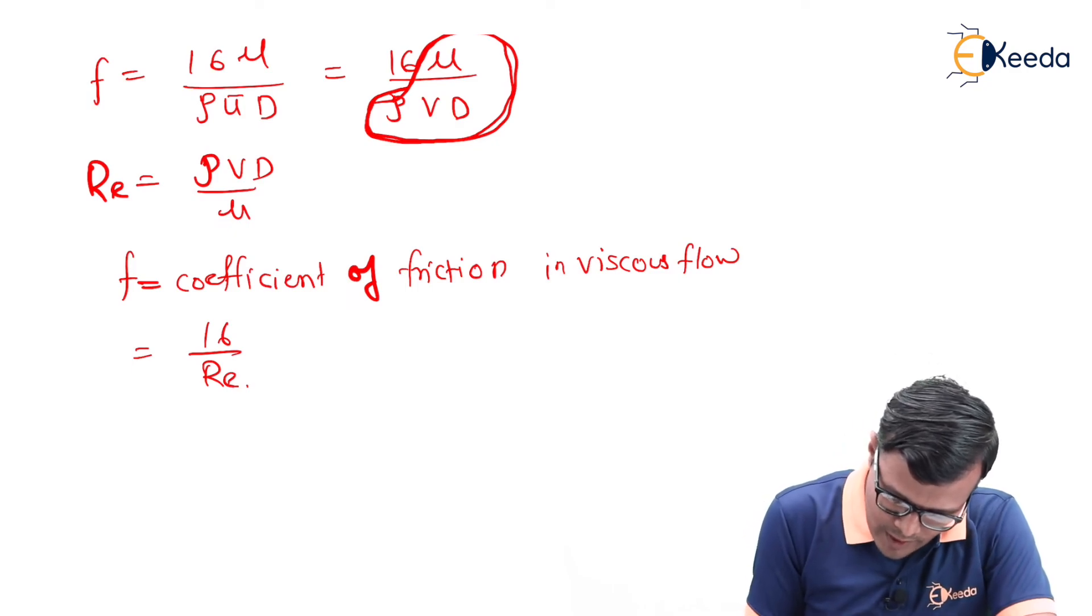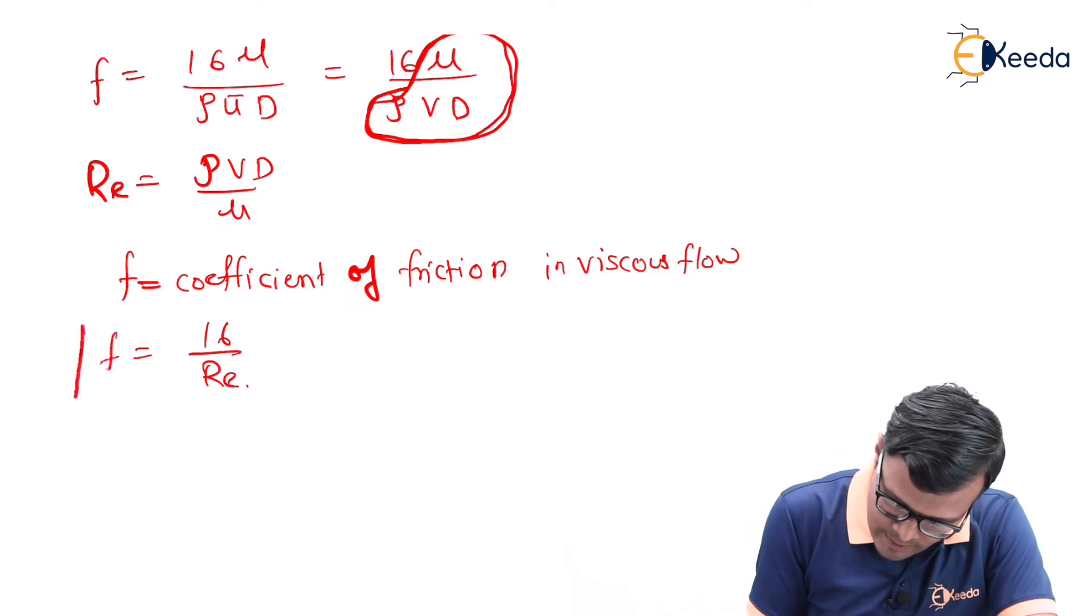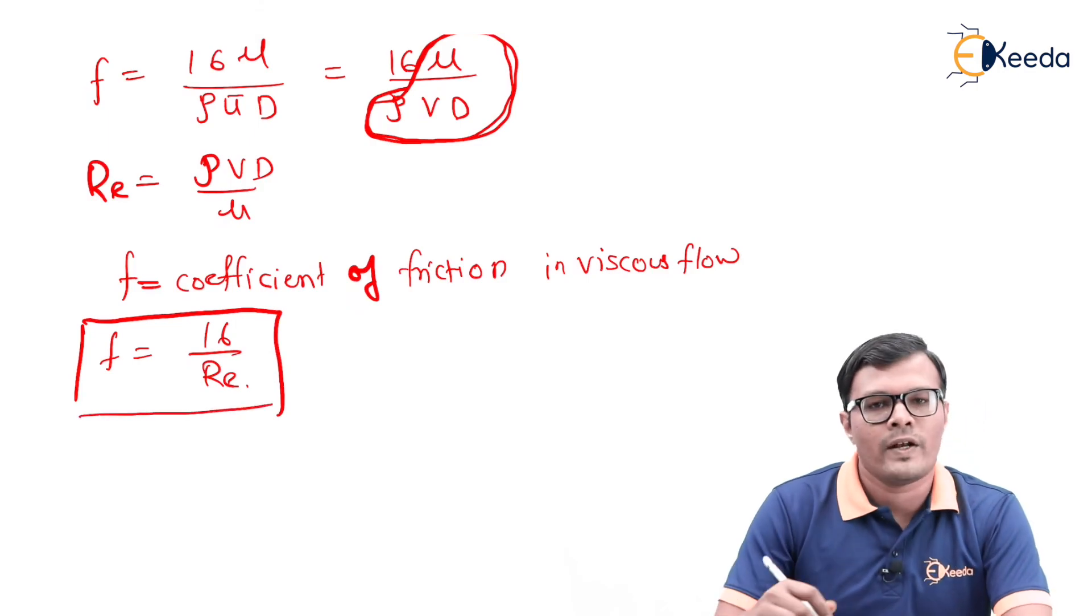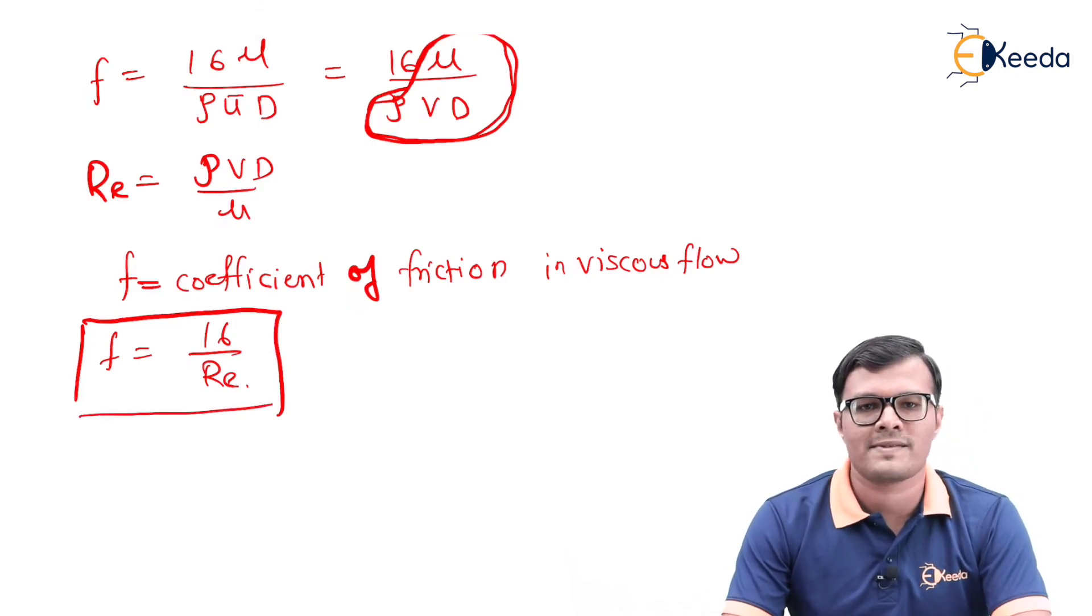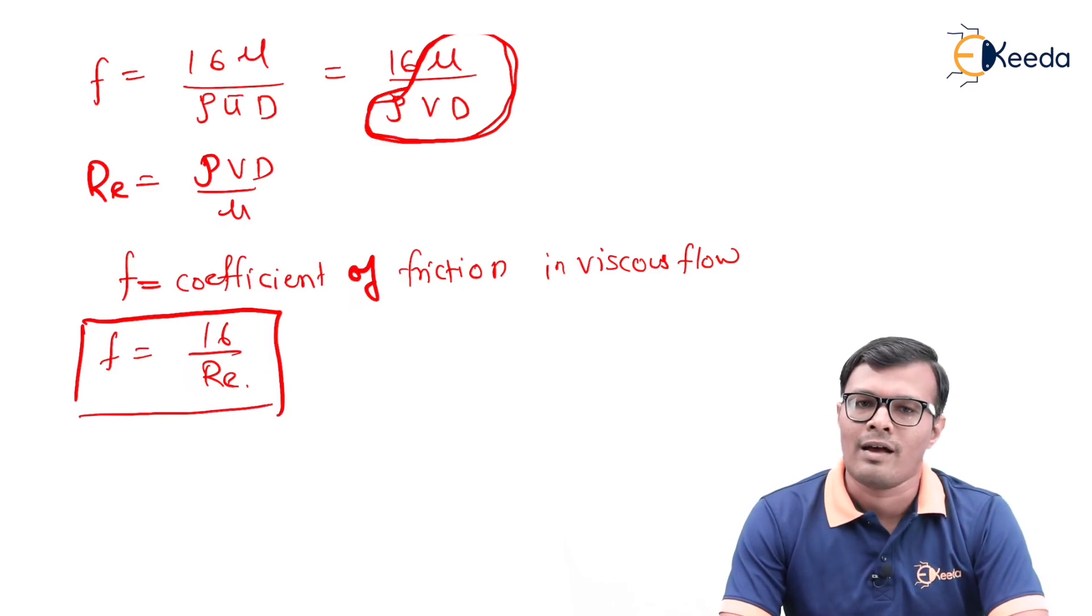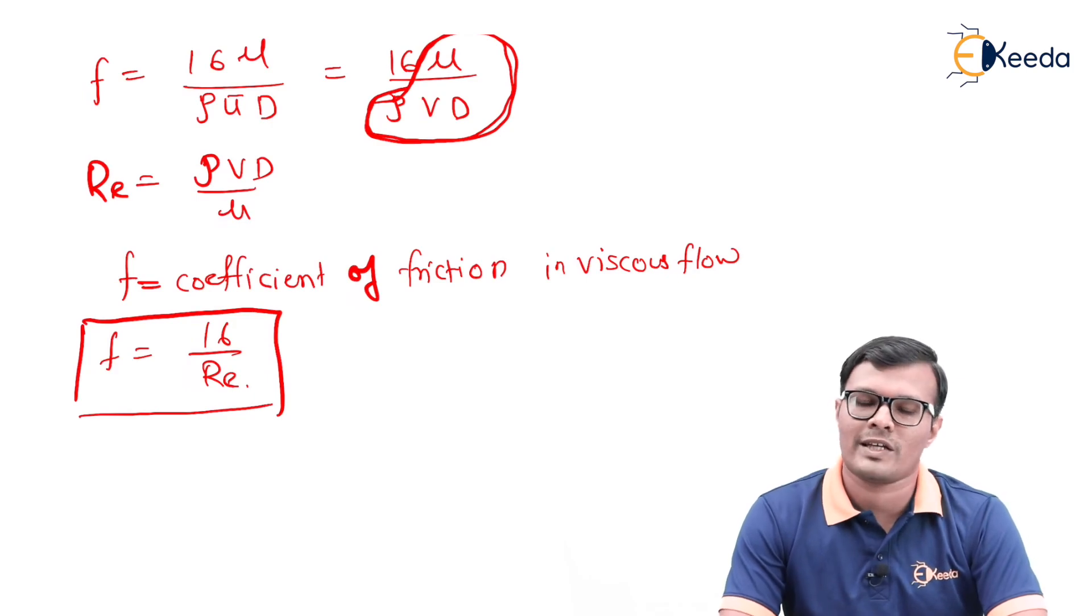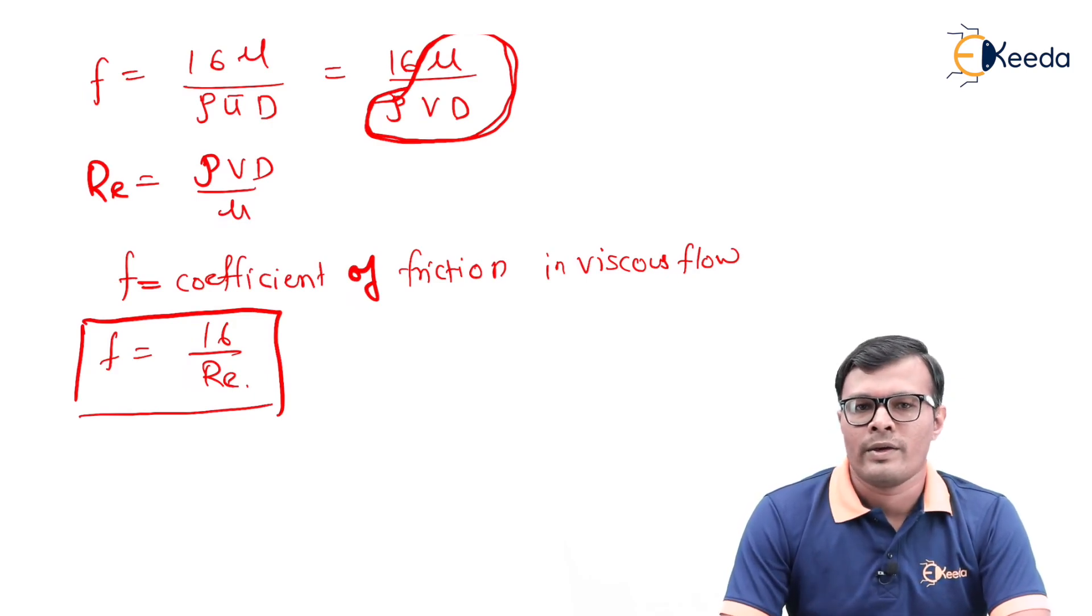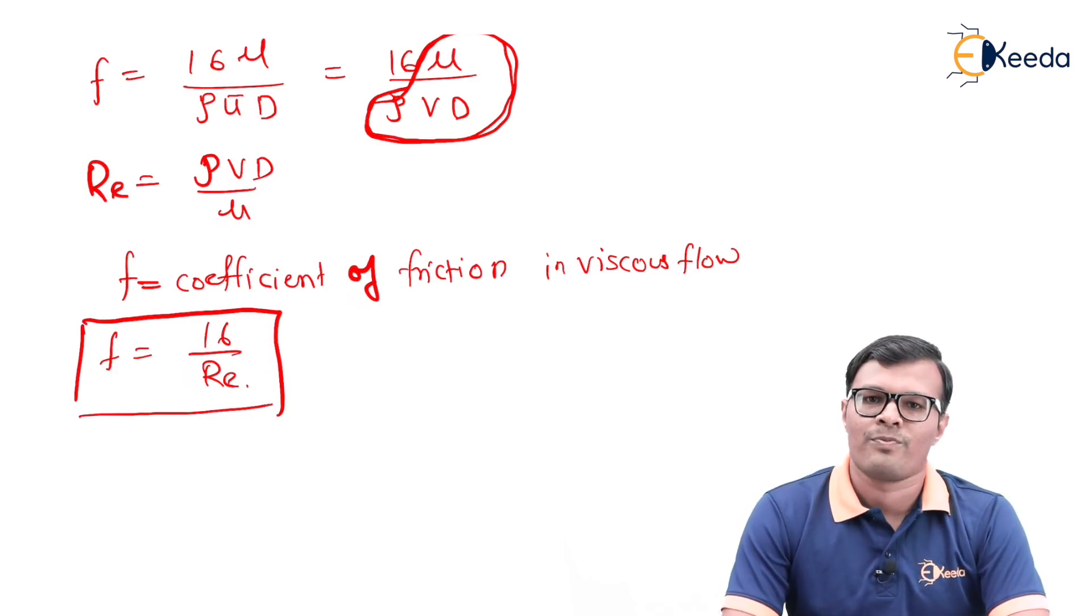This is a very important relation: f is nothing but 16 upon Re. Whenever we consider various competitive exams in civil engineering, then these types of relations are useful to solve the problems in very short time, so these are very important for exam point of view. That's all, thank you.